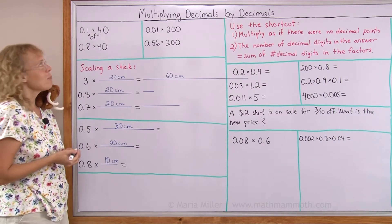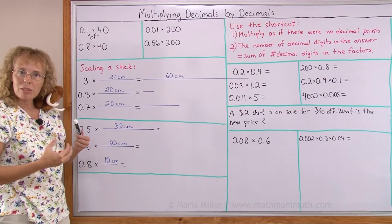1 tenth of 40, that's what it means. And what's 1 tenth part of 40? It's 4.